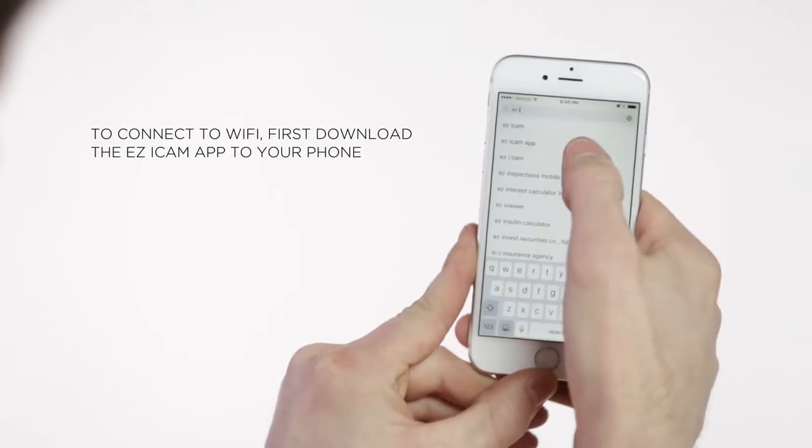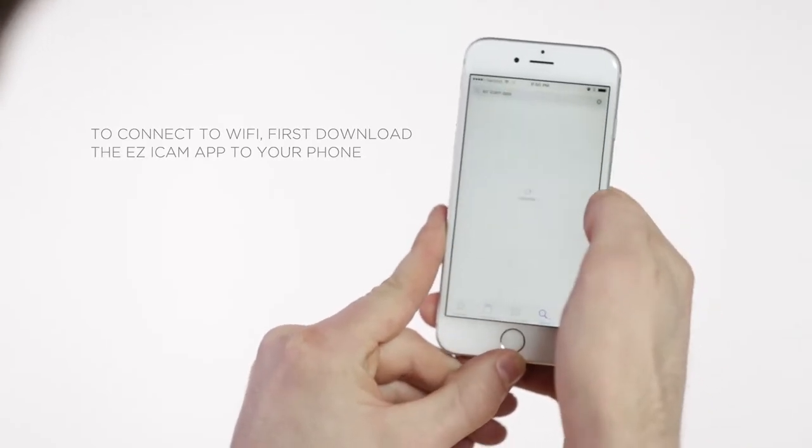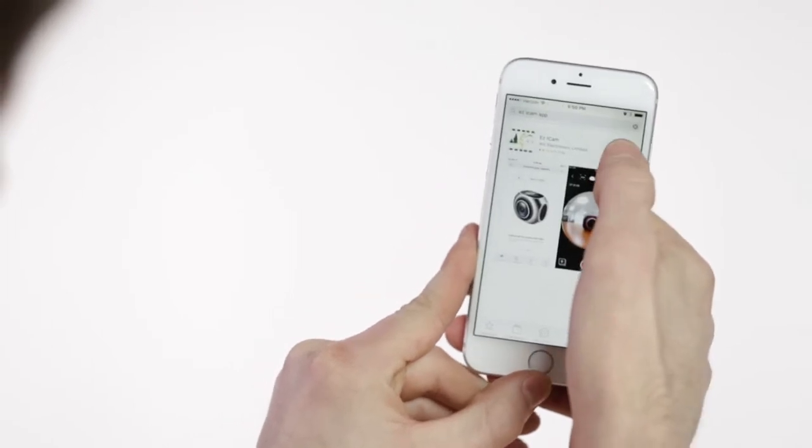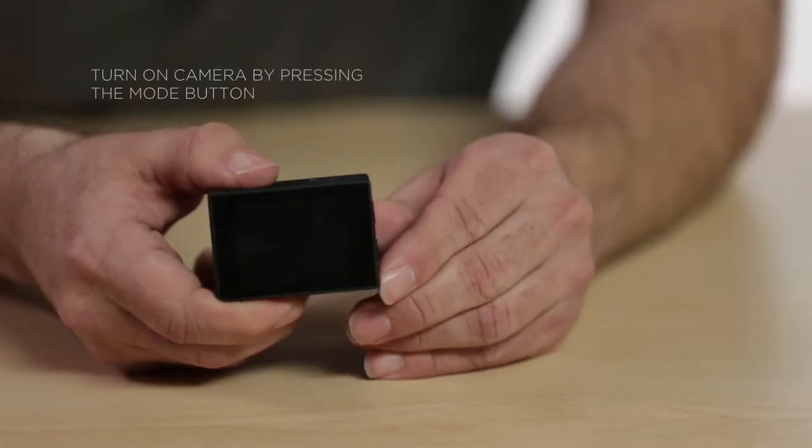To connect to Wi-Fi, first download the Easy iCam app to your phone. Then turn on the camera.